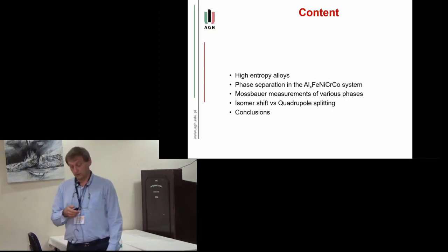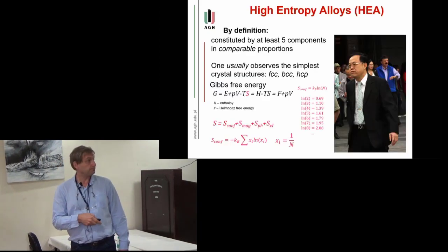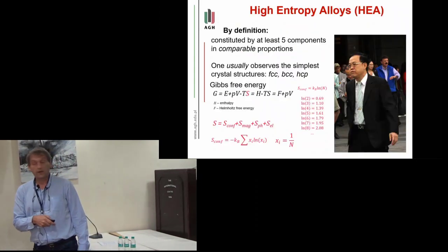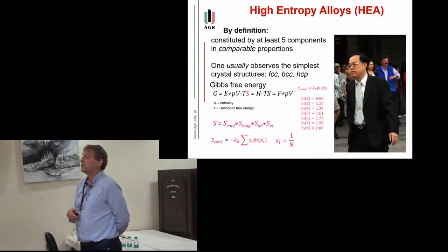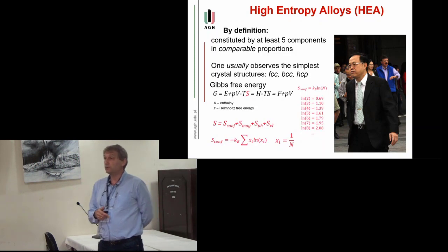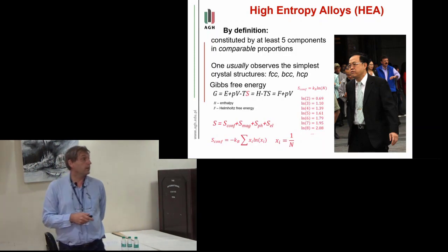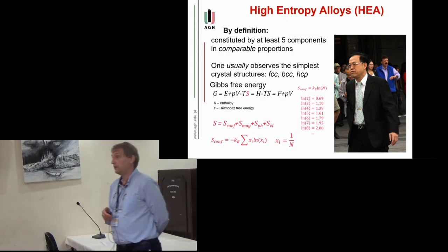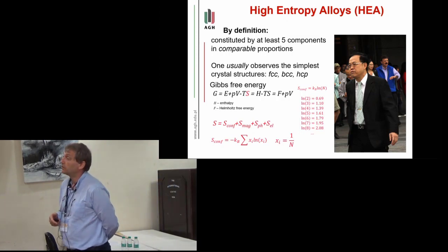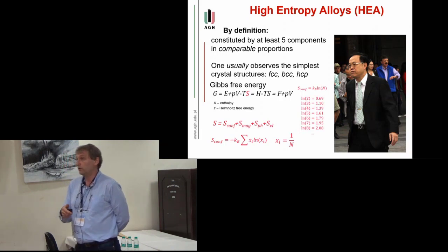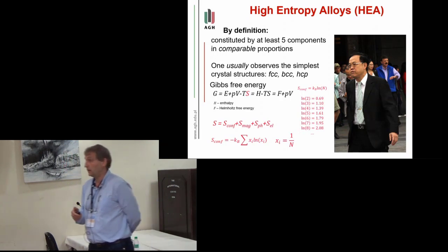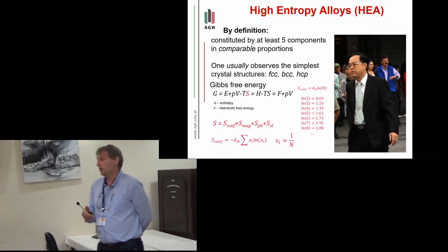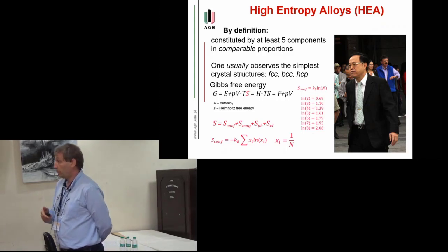This is the guy who is responsible for high-entropy alloys, Professor Yeh from Taiwan University. He proposed a completely new way of synthesizing materials. Usually when you're using steel, it is composed of one main component, usually iron, and a large number of additions which can modify its properties.